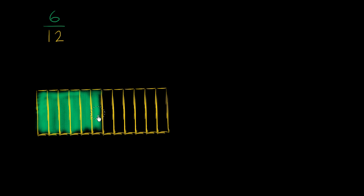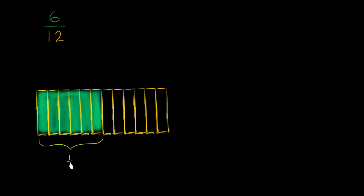Now how do we represent this thing in terms of tenths? Well, six and twelve are both divisible by six. So what if we rewrite this not in terms of twelfths, but in terms of halves? We could call all of this stuff one half, and this is another half. We're taking six of our twelfths together and turning them into a half — dividing the number of sections by six.